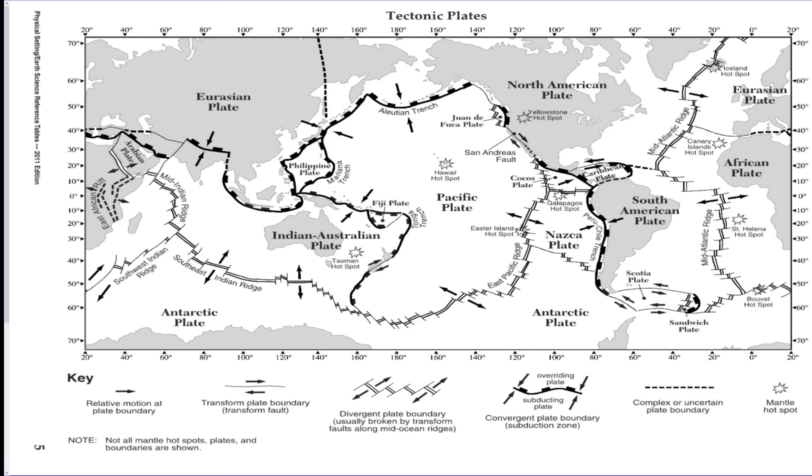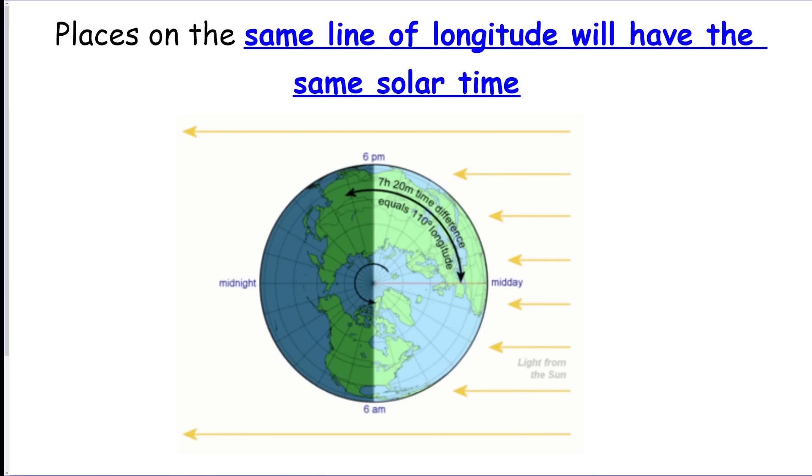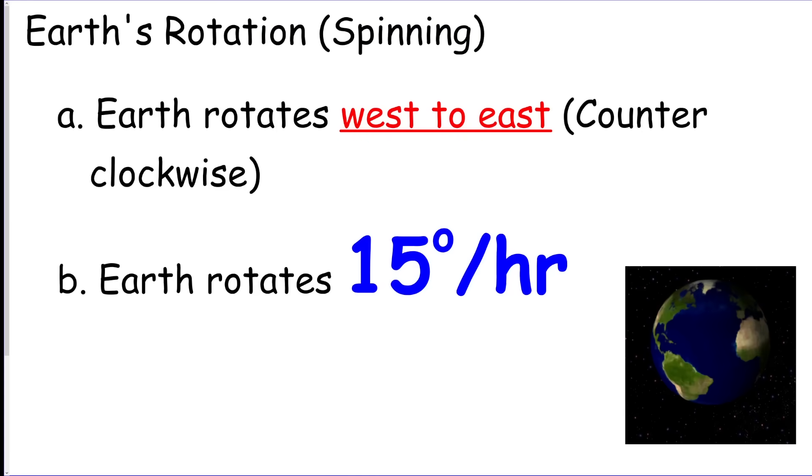Places on the same line of longitude will have the same solar time. So everywhere north and south have the same time zone. So as you go east, time will increase, and as you go west, time will get less. And that's because the Earth rotates. So we rotate west to east, 15 degrees per hour. That's 360 degrees in 24 hours. And if you divide that, you get 15 degrees per hour.